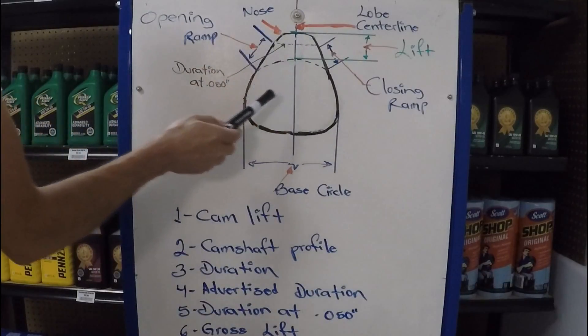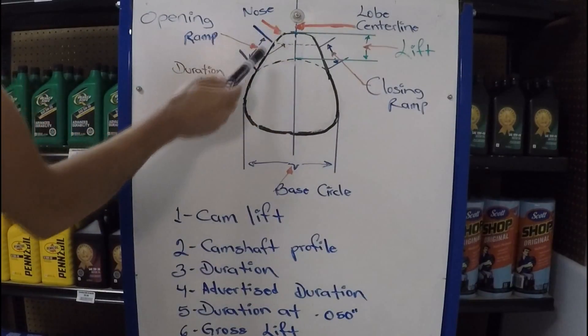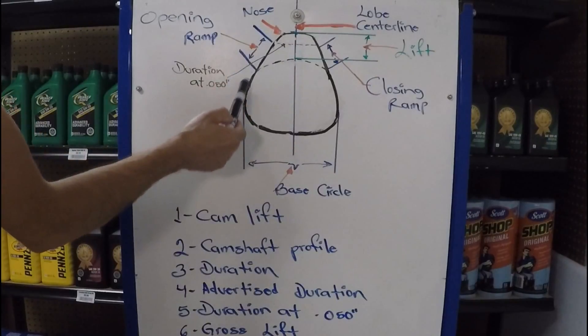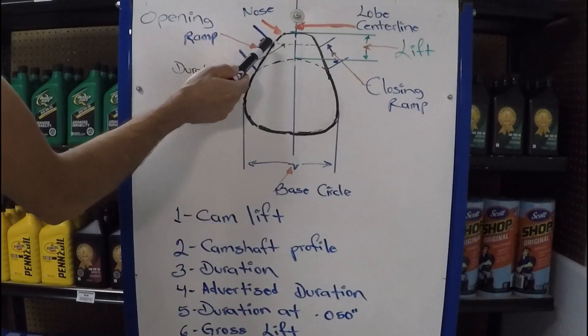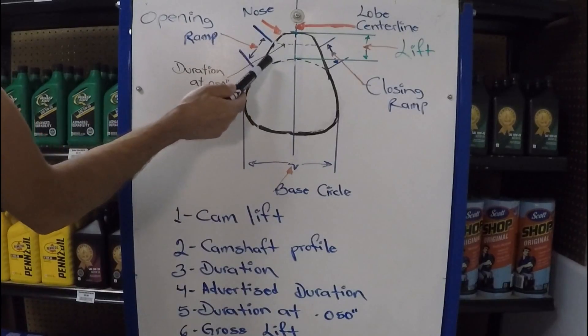So to get started, we're going to go over the camshaft lobe. You've got the nose right here. You have the opening ramp as the camshaft rotates. That is what's going to start pushing either the lifter or rocker arm or the valve directly, whichever, depending on the design.